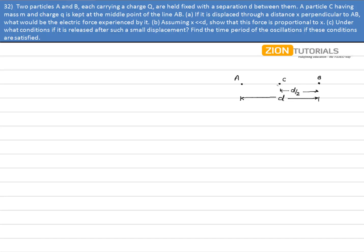Now according to part A of the question, if the charge C is displaced by a distance X in the direction perpendicular to AB, then the electric force experienced by it can be easily calculated by vector addition.